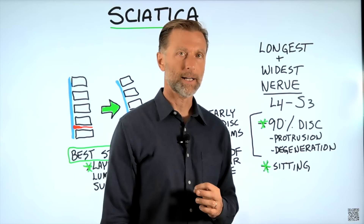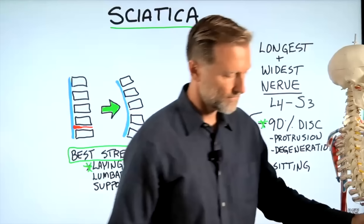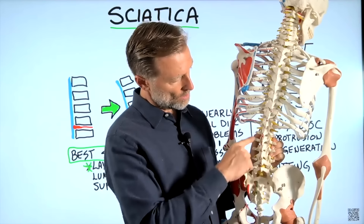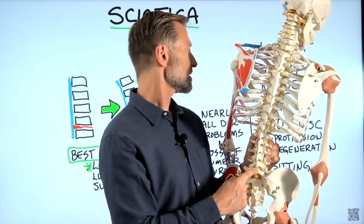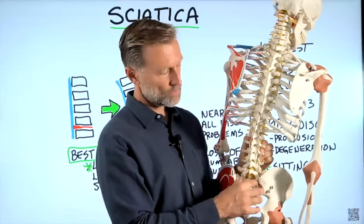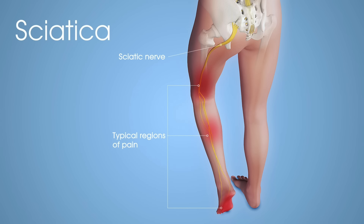It usually originates from L4 to S3, which I'm going to show you right here. You have five lumbar vertebrae — one, two, three, four, five. The sciatic nerve starts at L4, and includes L5 and then some nerves from the lower part called the sacrum. All these nerves form the sciatic nerve that goes right down to the back of the leg.